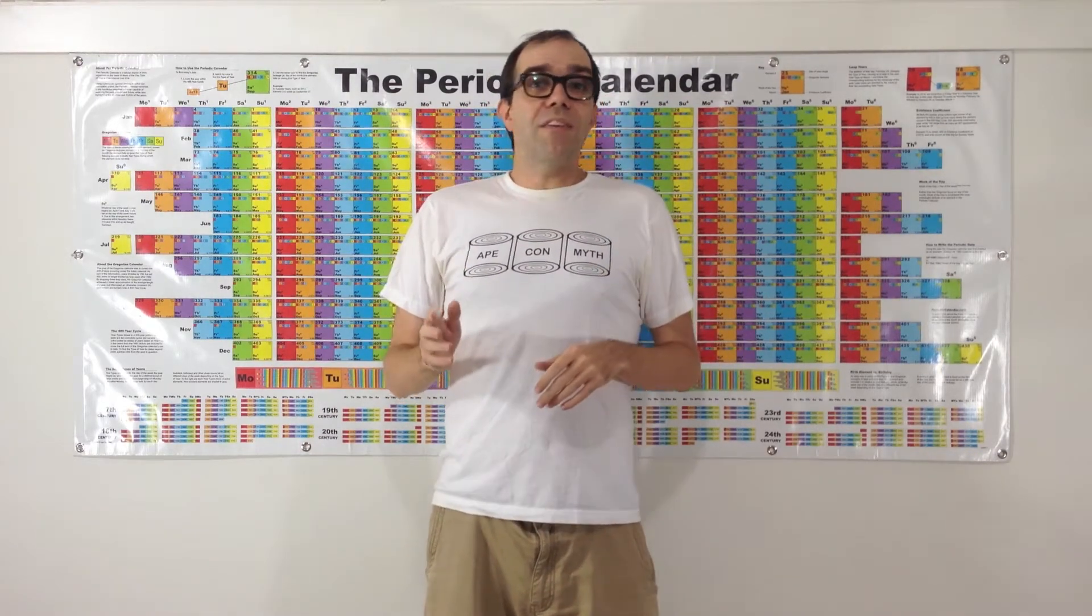But in addition to being a new way to look at time, it's also a perpetual calendar. Which means it's not only good for this year, and next year, and the year after that, it can work for any date going back to 1582 when the Gregorian Calendar first got its start, or into the future as far as we want to go.